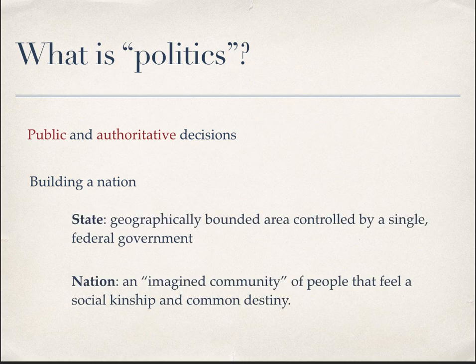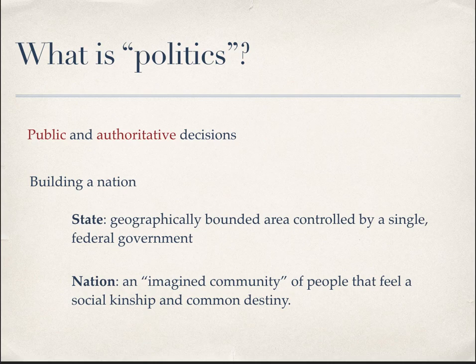One area in which states have the right to create policy is building a nation. It's important to recognize the difference between a state and a nation. A state is a geographically bounded area controlled by a single federal government — it's the territory and the institutions that control it. A nation, on the other hand, is an imagined community — a group of people who feel a particular social kinship and a common political destiny.